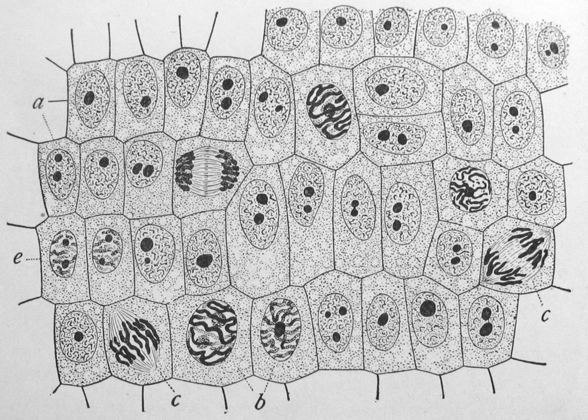The subunit protein of microfilaments is a small monomeric protein called actin. The subunit of microtubules is a dimeric molecule called tubulin. Intermediate filaments are heteropolymers whose subunits vary among the cell types in different tissues. Some of the subunit proteins of intermediate filaments include vimentin, desmin, lamin, lamins A, B and C, keratin, multiple acidic and basic keratins, and neurofilament proteins NFL and NFM.